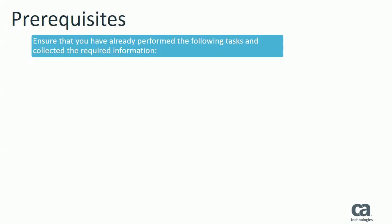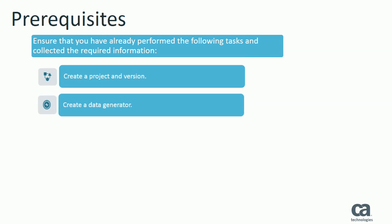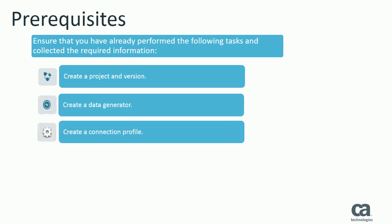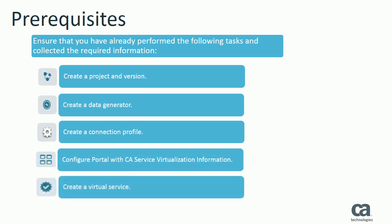Before you start the process demonstrated in this video, ensure that you have created a CA TDM portal project and version. You must also have created a data generator and verified that you have created a connection profile. Then, you should have configured the CA Service Virtualization connection information in the portal, and finally, you must have created a virtual service in CA Service Virtualization.